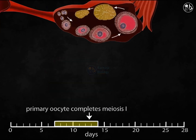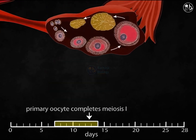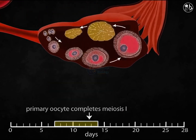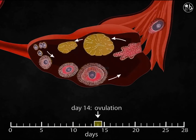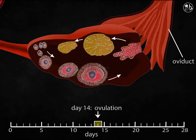The other cell, now the secondary oocyte, undergoes meiosis two and remains arrested until fertilization. Ovulation happens on day 14 and the secondary oocyte emerges from the ovary. Microscopic cilia of the oviduct draw in the liberated oocyte. This immature egg enters an oviduct where it may be fertilized by a sperm cell and complete the entire meiosis process.